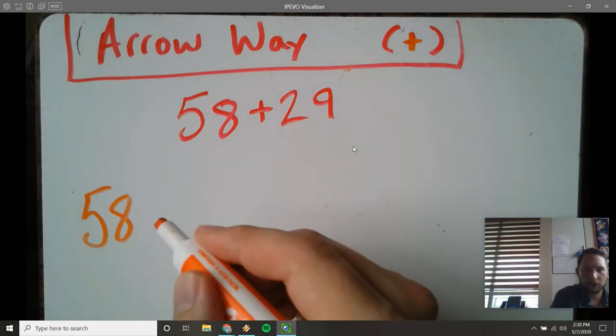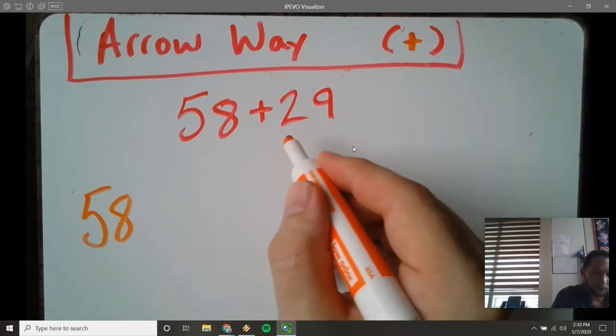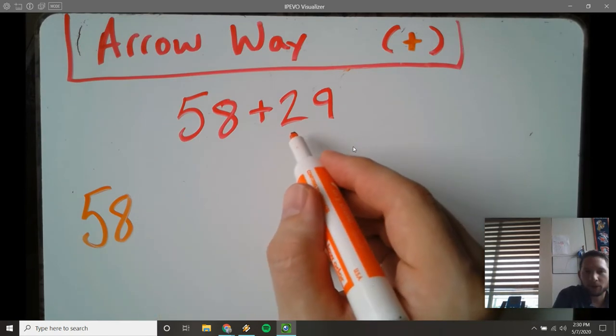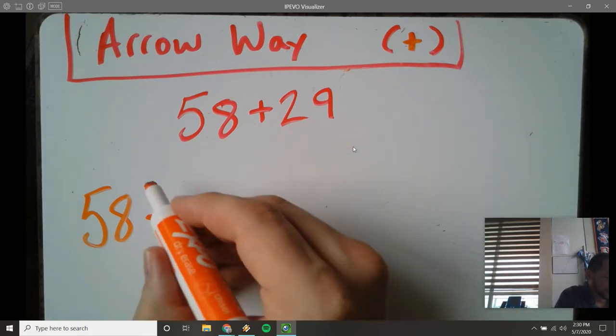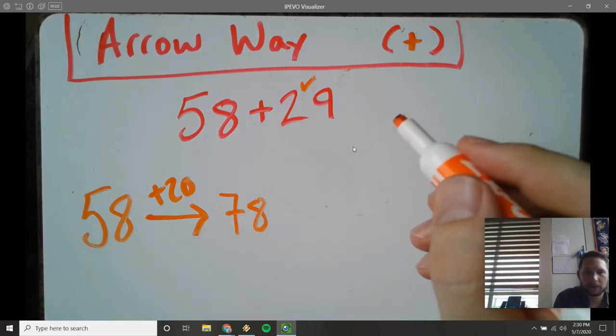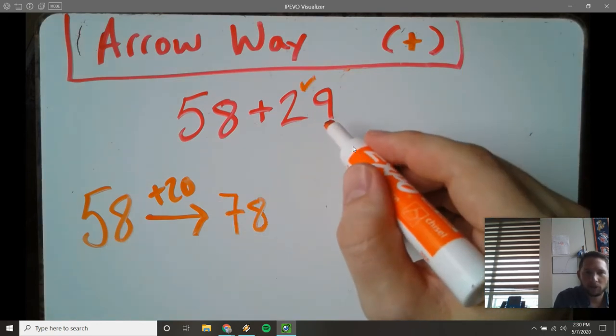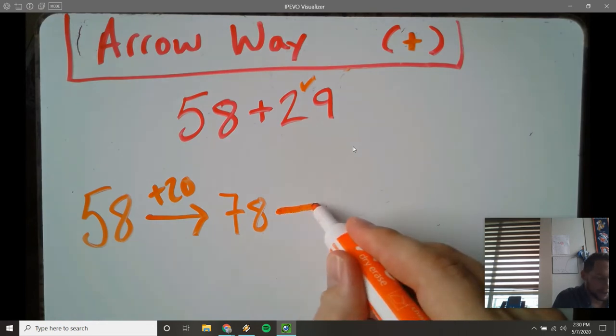58 is where we're gonna start and now we need to add 29. So I can do it a couple ways. I'm gonna decompose. I'm gonna add 20 first, so an arrow plus 20. 58 plus 20 is 78. I've done my tens.